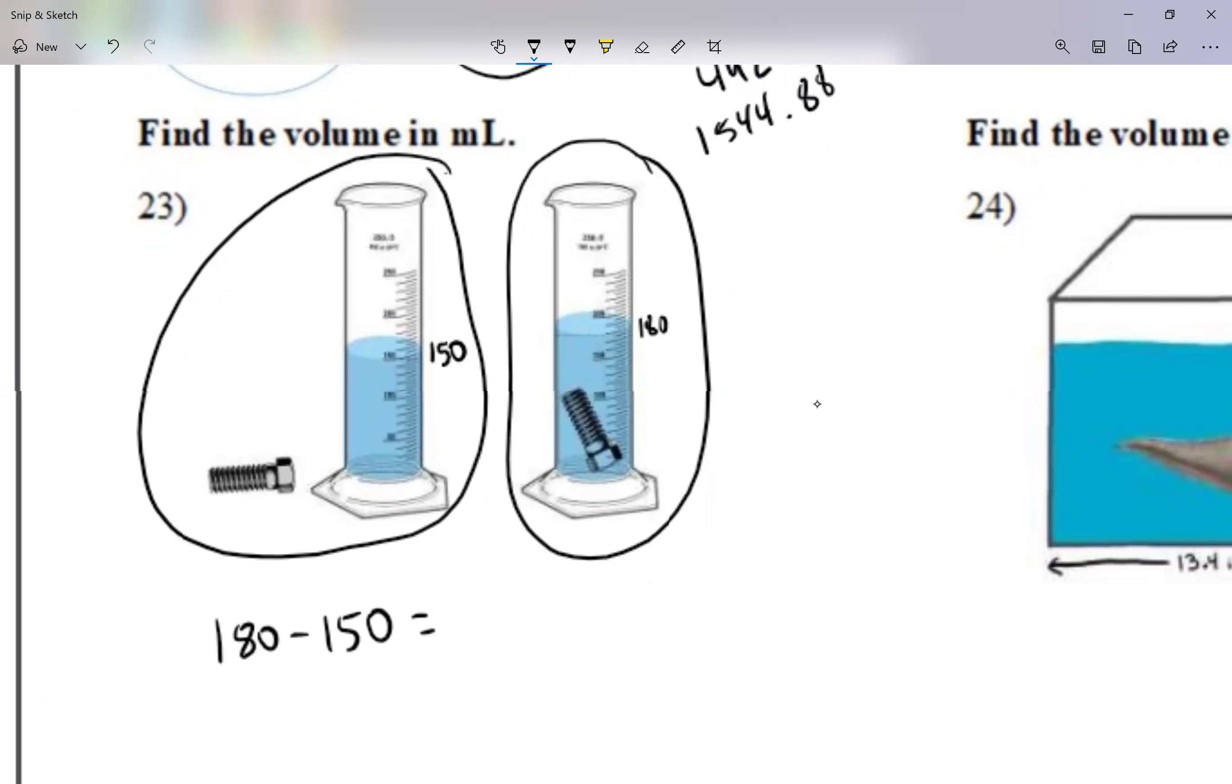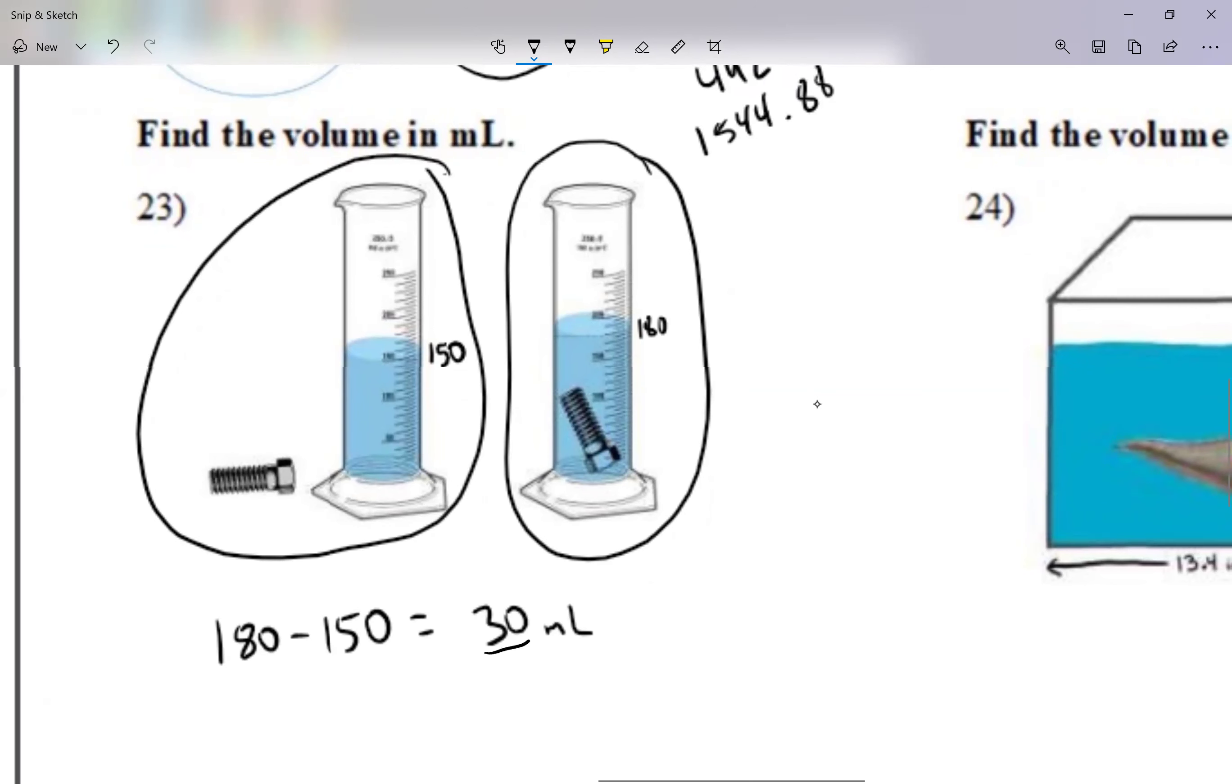That's going to give me the volume of that screw because 180 is the water with the screw, 150 is the water without the screw. So I'm going to say in this case that screw is 30 milliliters. 180 minus 150, that's it, I'm just going to subtract the two numbers.